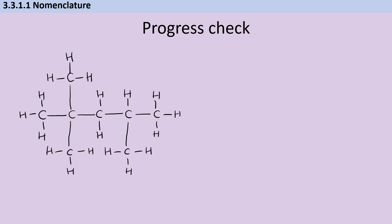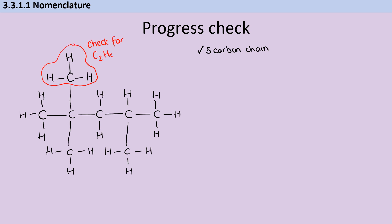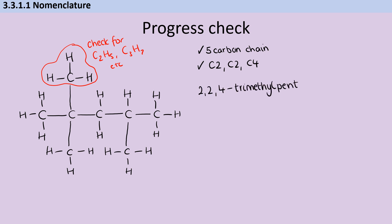Let's pause and have a look at this slightly complicated alkane molecule and see whether we can name it. The first thing I notice is that it has a five-carbon chain left to right, so I'm thinking it's going to be something based on pentane. Then I'll have a look at these methyl groups and double-check that they are only methyl rather than ethyl or propyl — because if they were ethyl or propyl, then five carbons might not be my longest chain. I've clocked that they're on carbon number two, carbon number two, and carbon number four. So I'm going to name this 2,2,4-trimethylpentane.